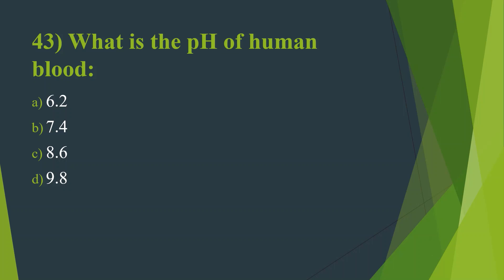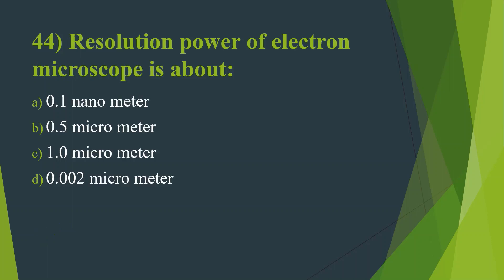Forty-third question: What is the pH of human blood? Option A, 6.2. Option B, 7.4. Option C, 8.6. Option D, 9.8. Answer is Option B, 7.4.